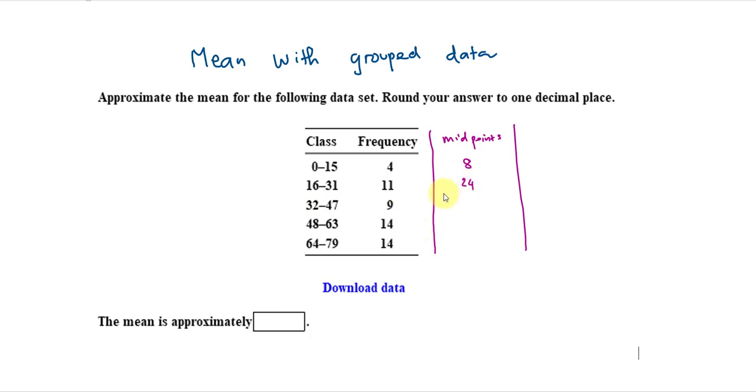And then, doing the same thing for the next class, I simply add 32 to 48 and then divide by 2, which will give me 40.